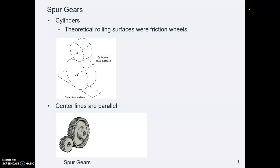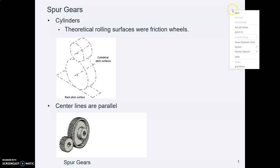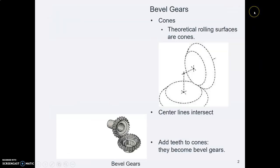Last week we looked at spur gears, where the center lines of the gears are parallel and the teeth are parallel. Now let's look at bevel gears, which instead of being cylinders are cone shapes, and the center lines intersect.